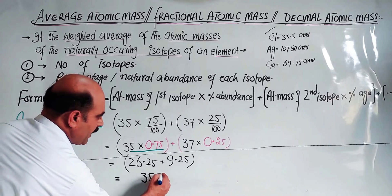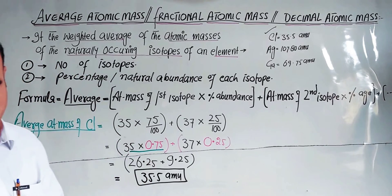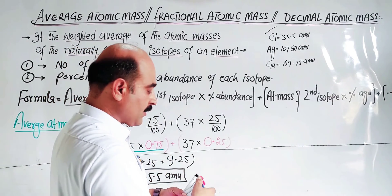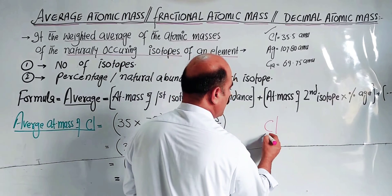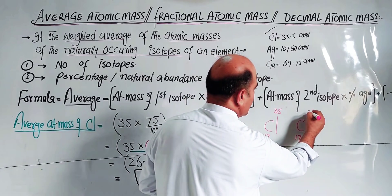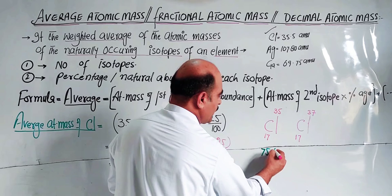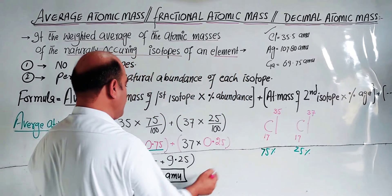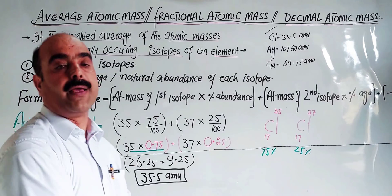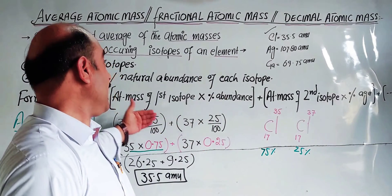The result is 35.5 AMU. So the average atomic mass of chlorine is 35.5 AMU, which depends on its 2 naturally occurring isotopes — Cl-35 at 75% and Cl-37 at 25% — giving us a weighted average.